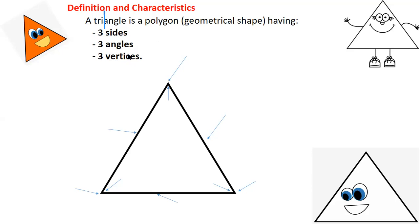Let us practice on this triangle. First, let us see the sides. This line we call it a side — this is side one. This line is also called a side — this is side two. This line is also called a side — this is side three. So these are the three sides in every triangle.